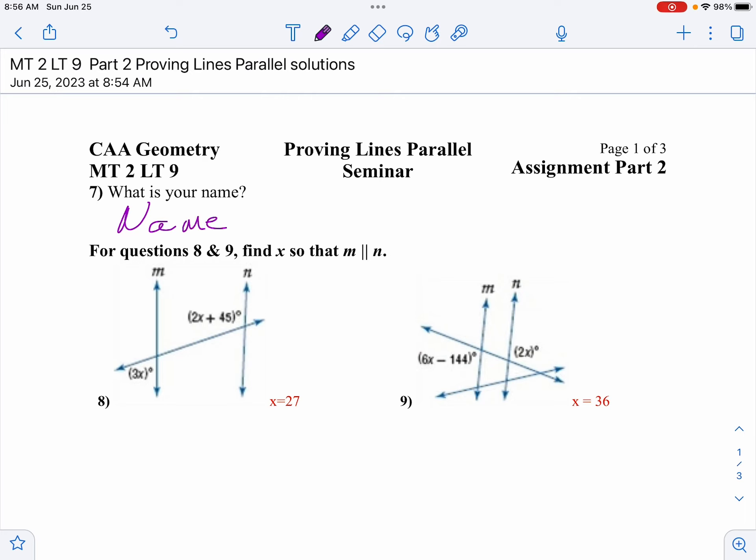On number 8, notice our corresponding angles. So this angle would be 3x. Well then we have a pair, we have a linear pair. So we can say 3x plus 2x plus 45 equals 180 degrees.